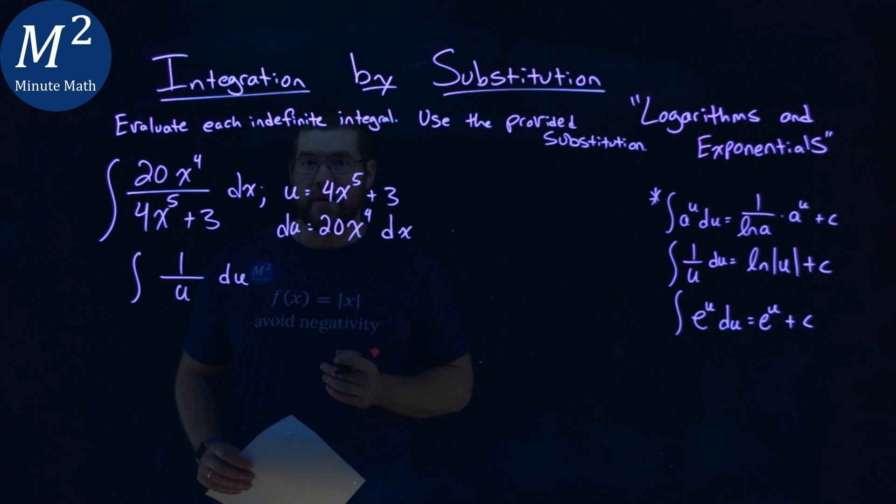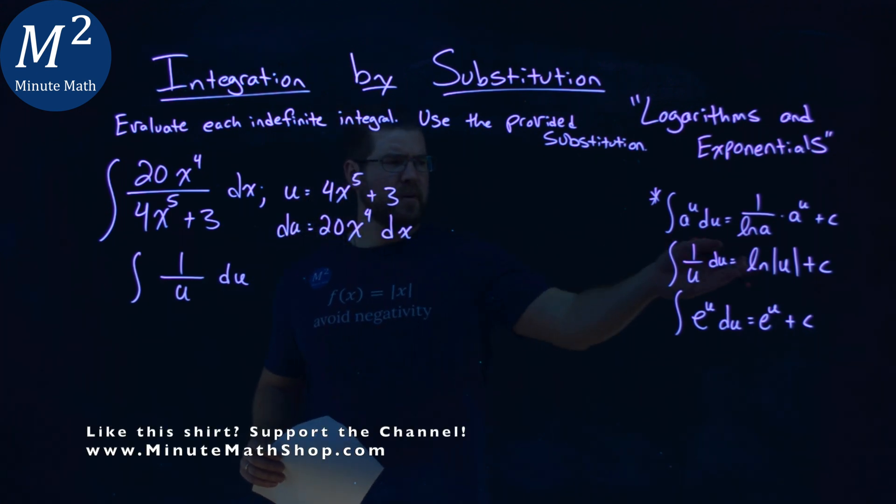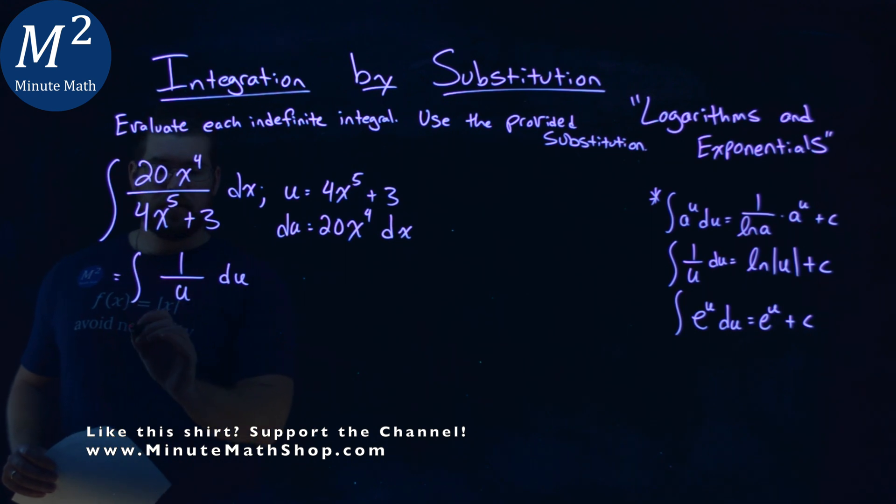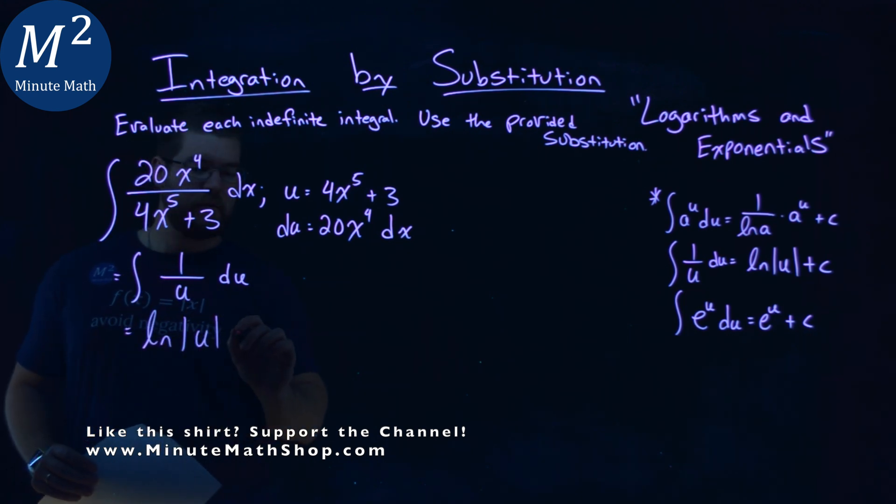Now we can use one of our definitions here. We see it right here that the integral of 1 over u du is equal to the natural log of the absolute value of u plus c.